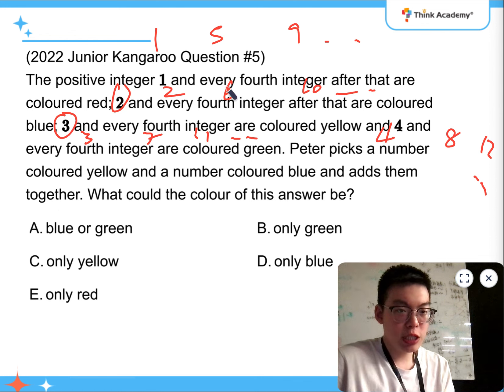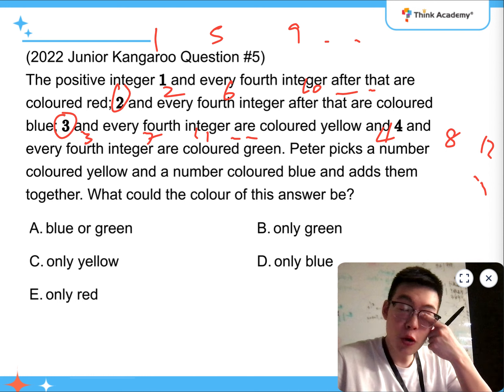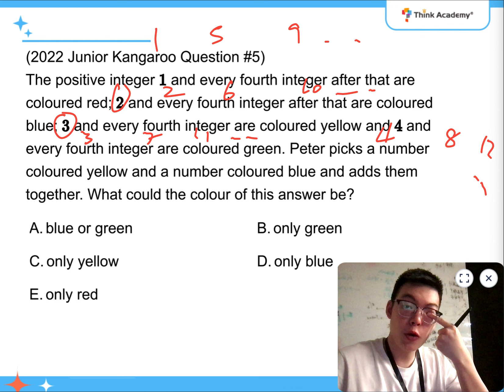First of all, you need to know what's the difference between the four categories. So, the first one, the red ones, is having a remainder of 1 when divided by 4. The second one, blue ones, having a remainder of 2. The yellow ones, having a remainder of 3. The green ones, having a remainder of 0.